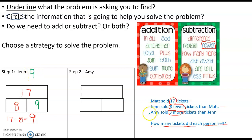Okay, now to Amy. Amy sold 3 more tickets than Jen. I see the word more here, and as I look up here, I also see the word more under addition. So this tells me that I need to add.